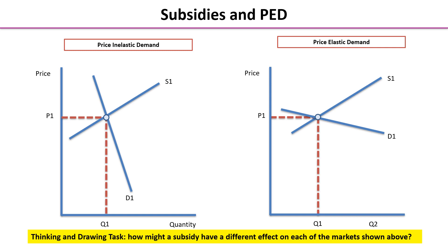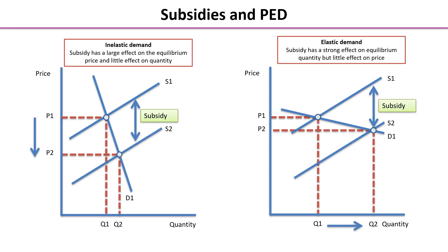So if you've now added your supply curves, hopefully we have something that looks like this. On the left, in the inelastic demand market, we can see that the subsidy has had a large effect on equilibrium price, and whilst it has increased the equilibrium quantity, it is only by a small proportion, because this product is not very sensitive to price changes. On the right, where we have price elastic demand, the subsidy has a strong effect on the equilibrium quantity from Q1 to Q2, but very little effect on the equilibrium price — just a small change between P1 and P2 — because this product is very price elastic, so it's sensitive to price changes.